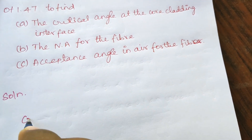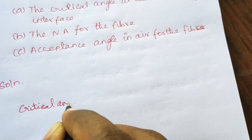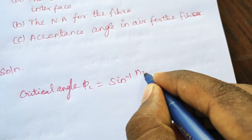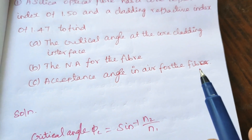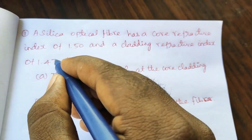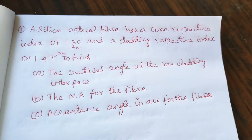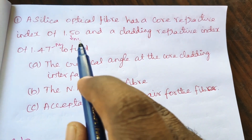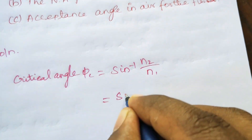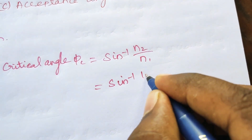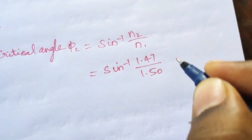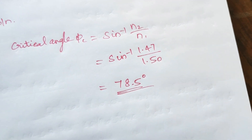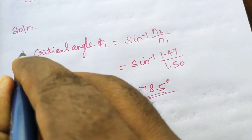The critical angle θc is equal to sin inverse of N2 by N1. We know N2 and N1 values: refractive index N1 is 1.50 and cladding refractive index N2 is 1.47. Substituting: sin inverse of 1.47 divided by 1.5. So the critical angle is 78.5 degrees.